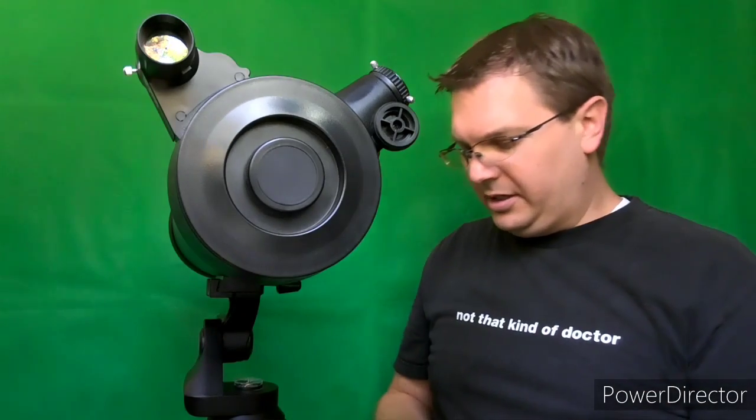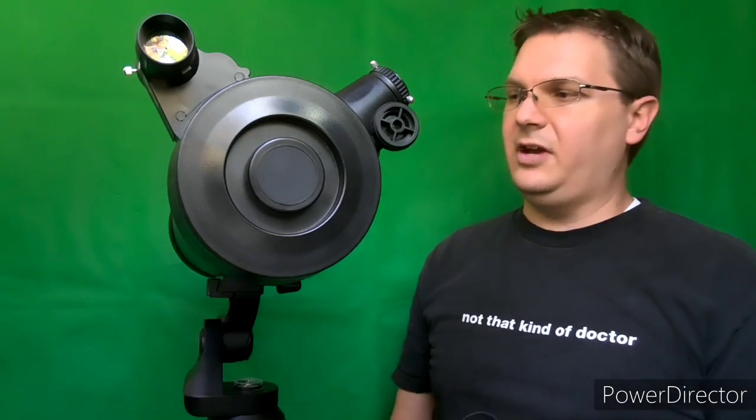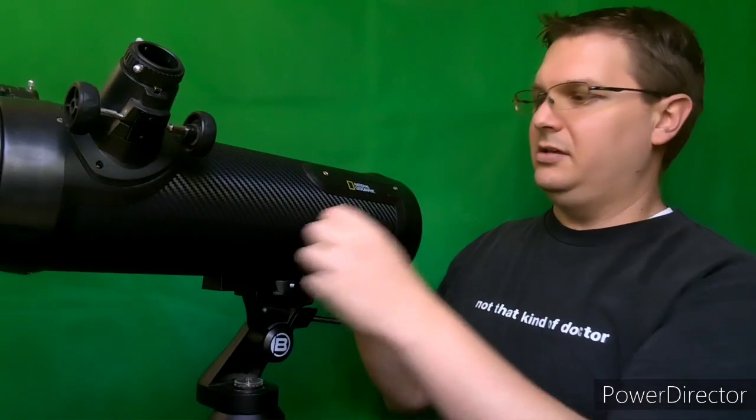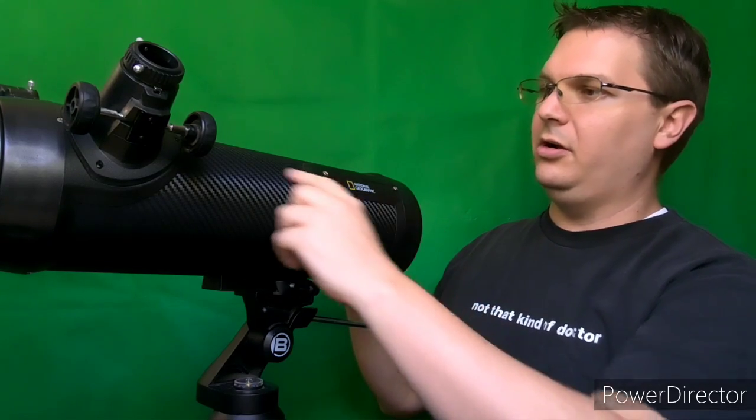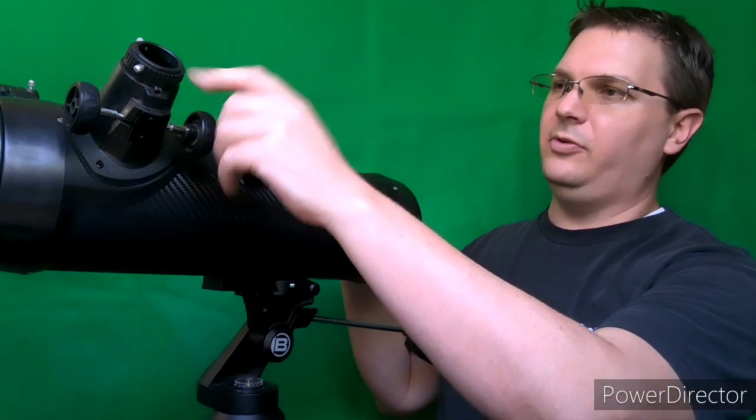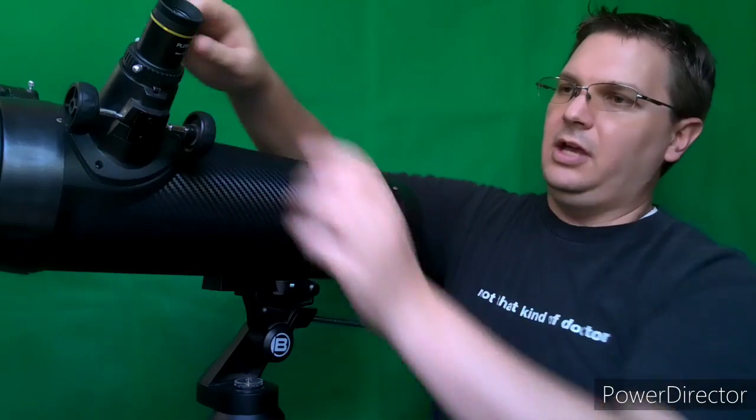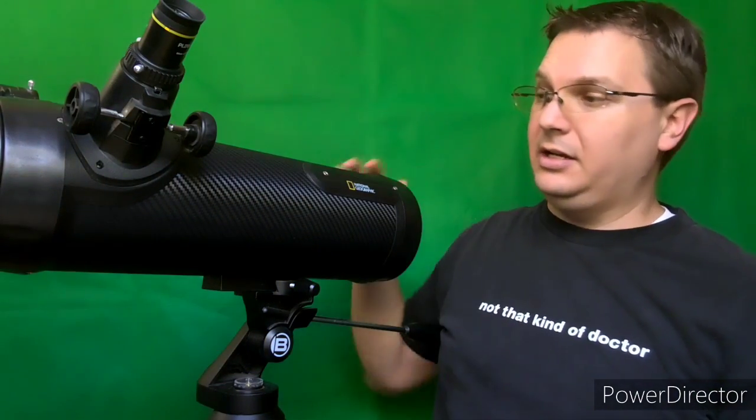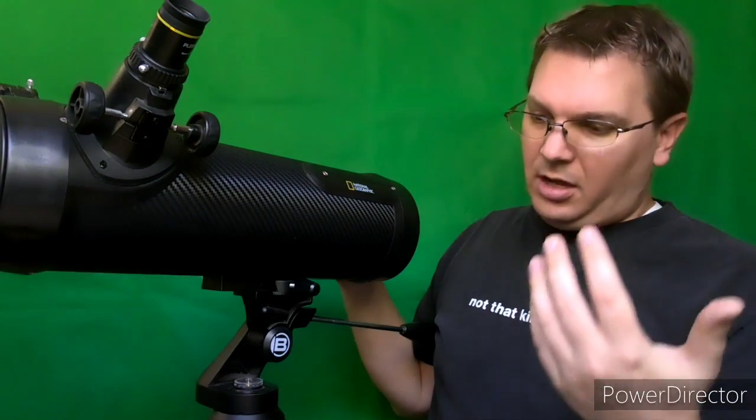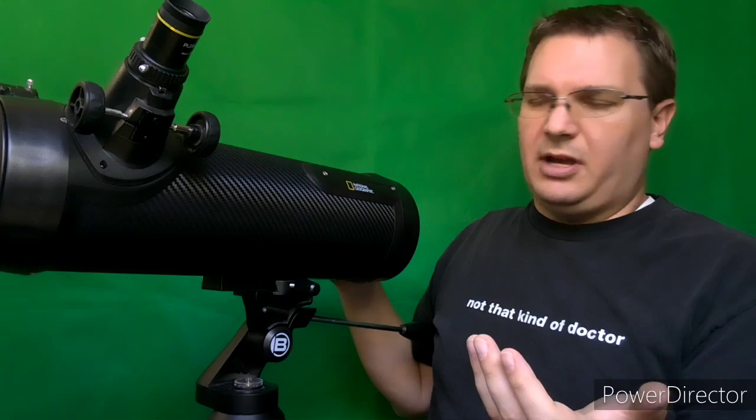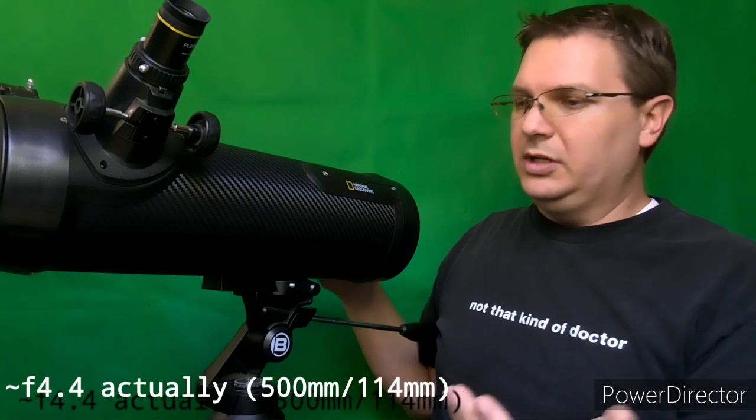Which coincidentally the focal length is 500 millimeters, and the focal length is the distance from the primary mirror here up to the secondary mirror up to the focuser and to the eyepiece that you have placed inside. So 500 millimeters, which is pretty good. So that makes this about an F 4.2 telescope.